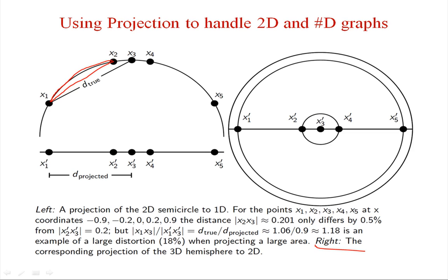This is the corresponding projection of a 3D hemisphere into a 2D plane, and of points on a circle onto a line. By using a similar approach, we can apply the projection technique to reduce the dimension of our document vectors.